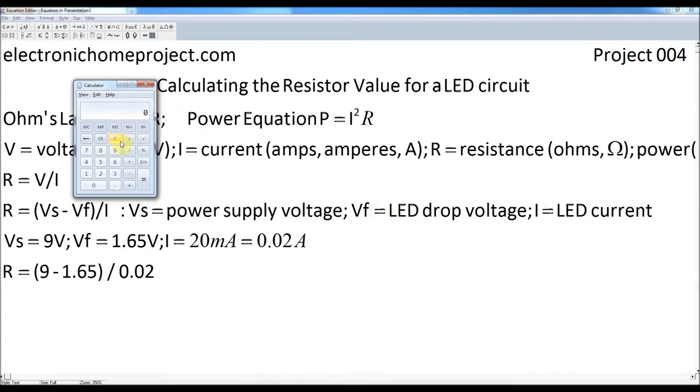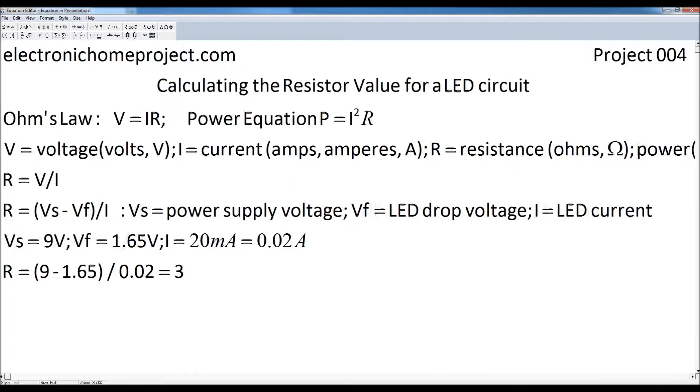So 9 minus 1.65, divided by 0.02, is 367.5 ohms. Okay. So there we go. That's the resistor value.